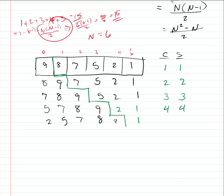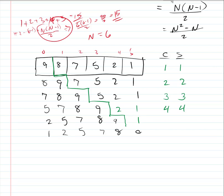The same situation happens with one: compare-swap, compare-swap, compare-swap, compare-swap, compare-swap — five comparisons and five swaps. We end up with one, two, five, seven, eight, nine as our final sorted result.